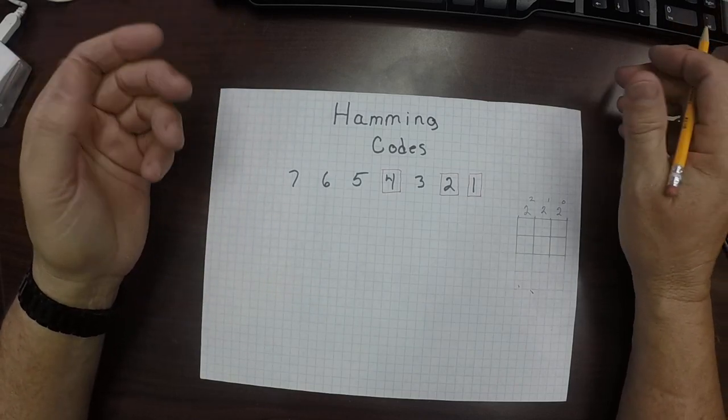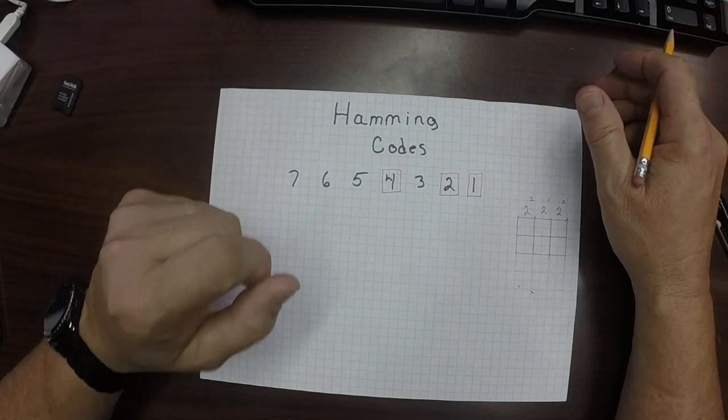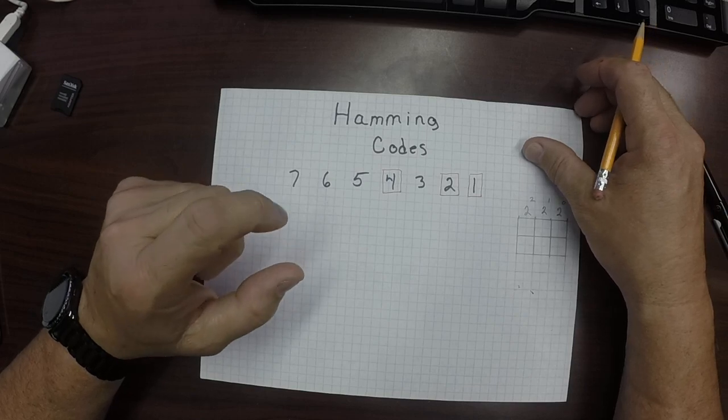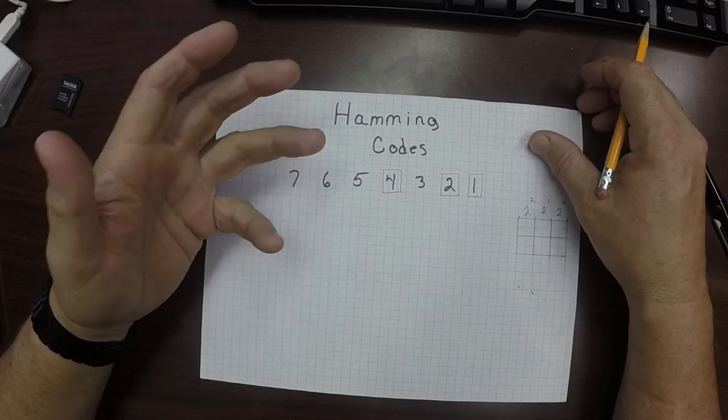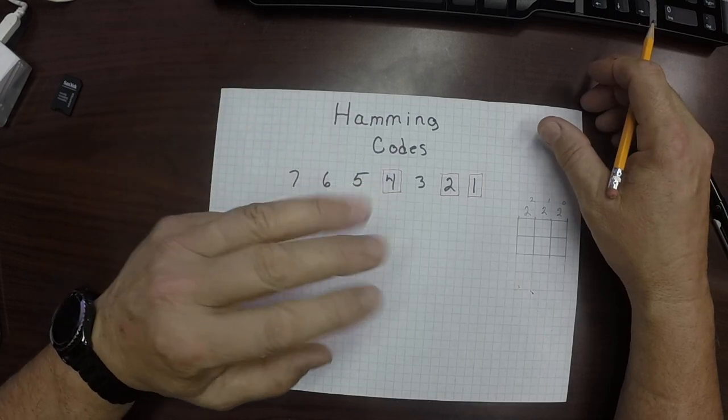Whereas just a simple parity bit can only detect an error but cannot correct them, Hamming Codes are what's called Perfect Codes. That is, they achieve the highest possible rate for codes with their block length and a minimum distance of 3.